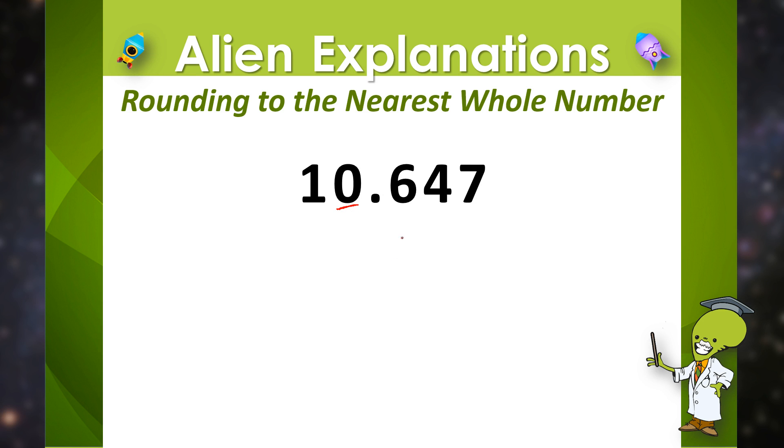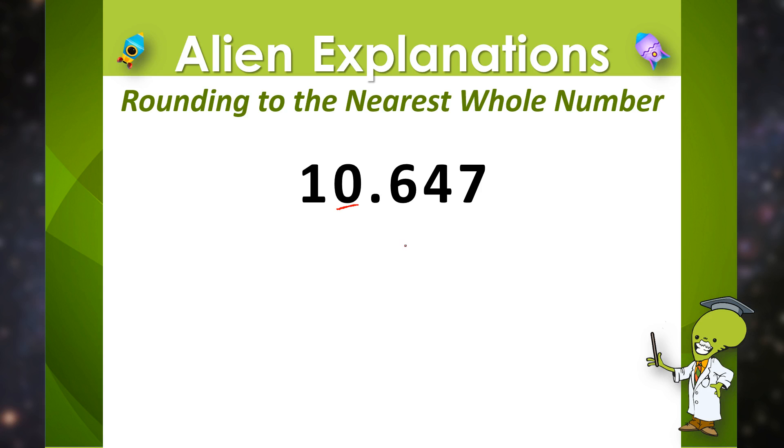The digit behind the 0 tells us that our number has a value that is between 10 and 11. So to round the number to the nearest whole number, we only need to focus on the digit in the place value spot that is directly behind the ones place, which is 6.